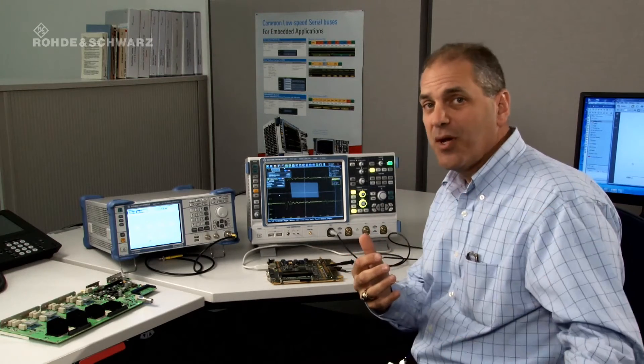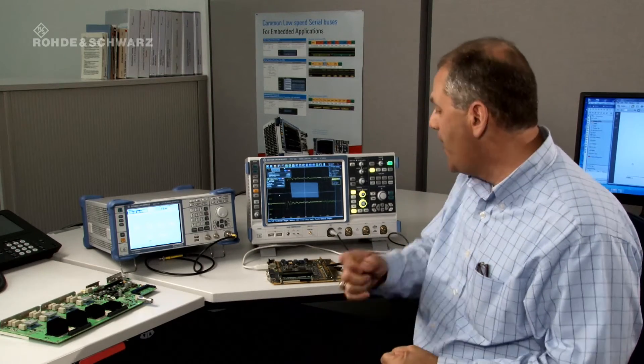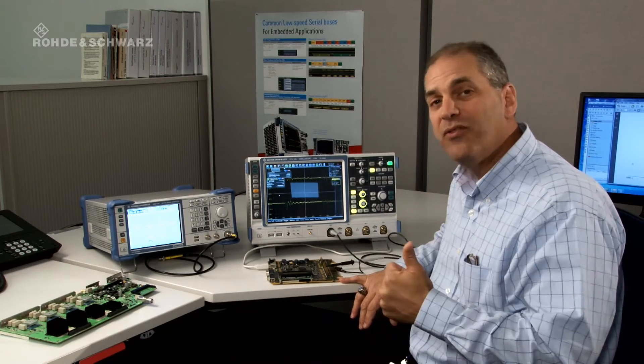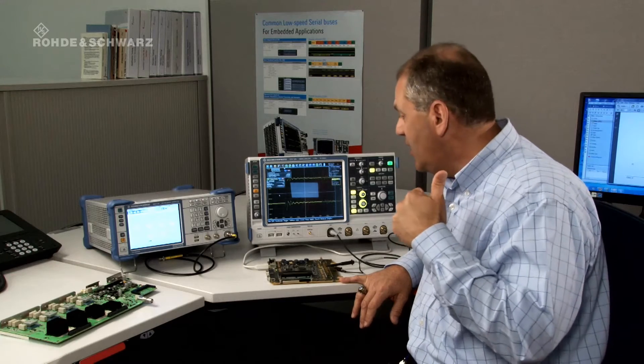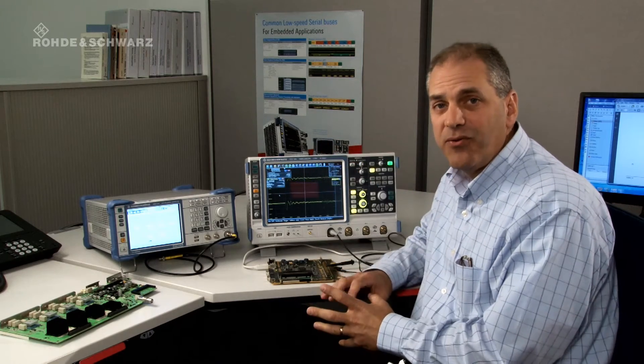This is important because if I'm trying to find a rare event, I want my update rate as fast as possible. Now this board is designed to generate a random error that causes a failure once every second. At this update rate, it should take about 30 seconds to find that. At a slower update rate, which is typical of most oscilloscopes, this could take minutes to hours and even in some cases days.